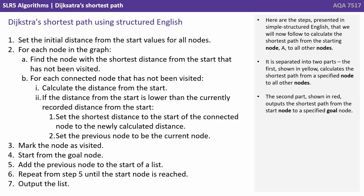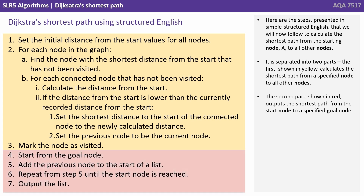Here are the steps, presented in simple structured English, that we will now follow to calculate the shortest path from the starting node A to all other nodes. It is separated into two parts. The first part, shown in yellow, calculates the shortest path from a specified node to all other nodes. The second part, shown in red, outputs the shortest path from the start node to a specified goal node.